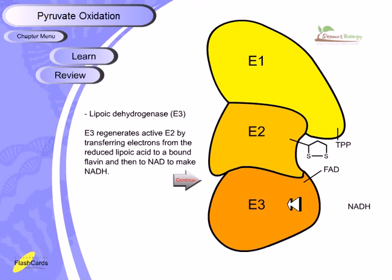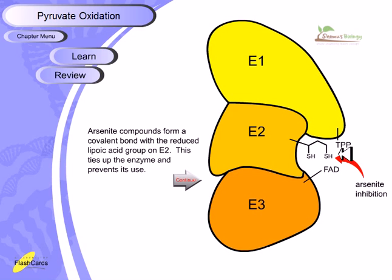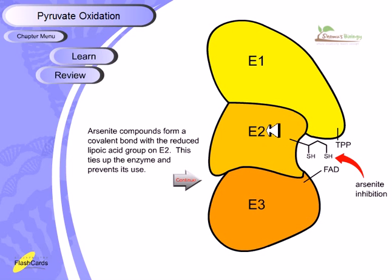Arsenic forms a covalent bond with the reduced lipoic acid group on E2, which is why arsenic acts as a potent poison. Arsenic attaches to the reduced form of lipoic acid, ties up the enzyme, and prevents its use. The resulting bond is so strong that other enzyme components cannot displace the arsenic, meaning the two sulfur groups can never be rejoined and re-oxidized. This blocks E2 function and stops the entire pyruvate dehydrogenase complex.